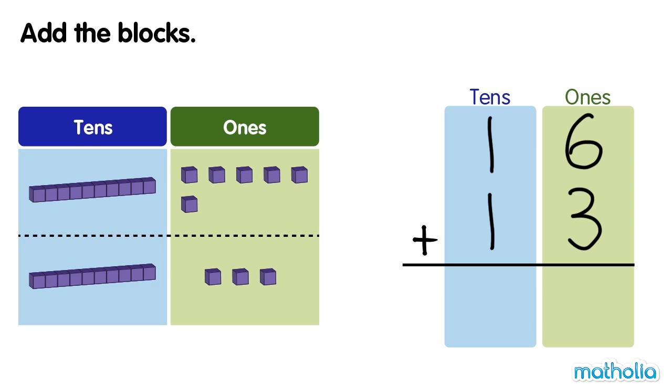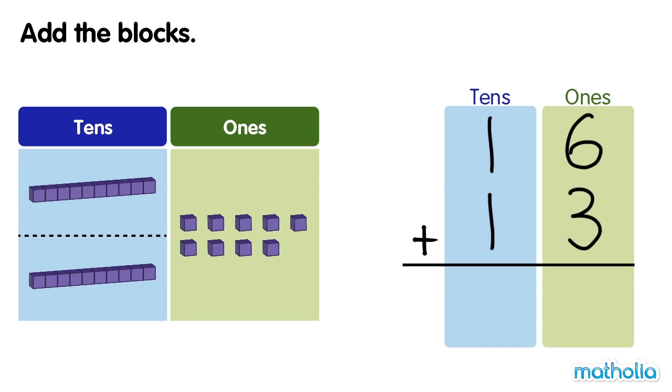Let's start by adding the ones. There are 9 ones. 6 ones plus 3 ones equals 9 ones.